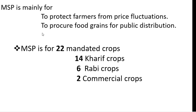Minimum Support Price covers 22 mandatory crops: 14 Kharif crops, 6 Rabi crops, and 2 commercial crops. The Cabinet Committee on Economic Affairs, chaired by PM Narendra Modi, has approved the increase in Minimum Support Price for all mandated Kharif crops, and hence for 14 crops this has been released for the Kharif season 2021 to 2022.